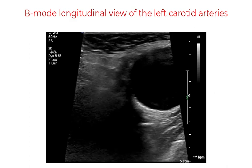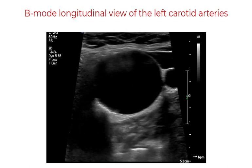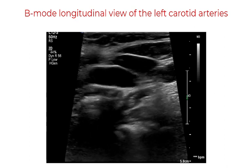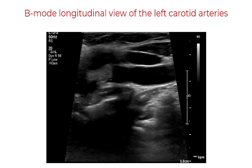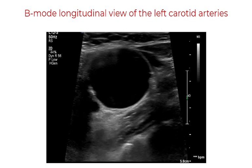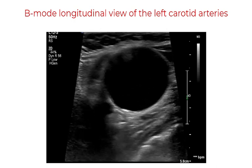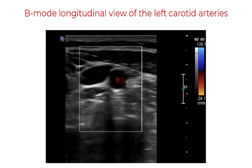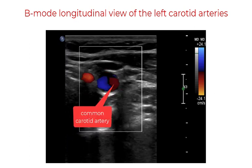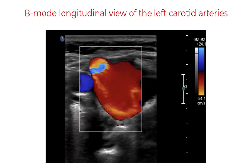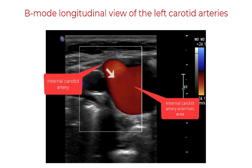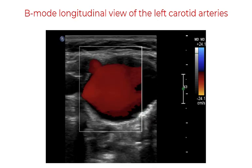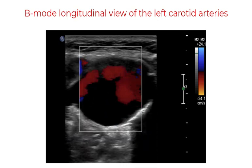We can note that this area is anechoic, which suggests the presence of fluid, and at this end we can see the internal carotid artery. The internal carotid artery appears to open into this anechoic region. By applying color flow Doppler, we can then determine whether flow is contained within this region. We can see that indeed there is color flow which appears to come from the internal carotid artery, due to the presence of a jet where the internal carotid artery is present.